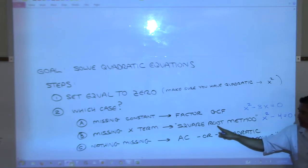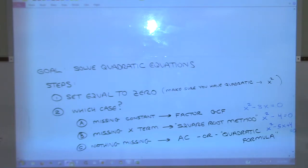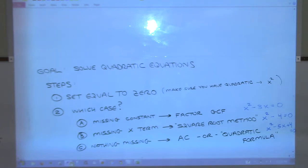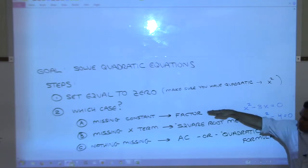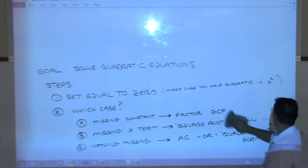If we're not missing anything at all - something like x squared minus 5x plus 4 equals zero, where we have the x squared term, an x term, and a constant - then we'll use either the AC method or the quadratic formula. The idea is we have a systematic approach that will get us to the answer as fast as possible. Let's go through some worked examples.